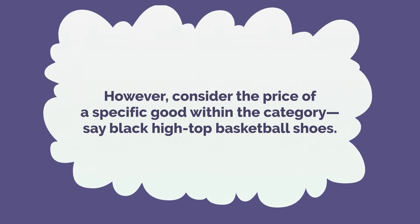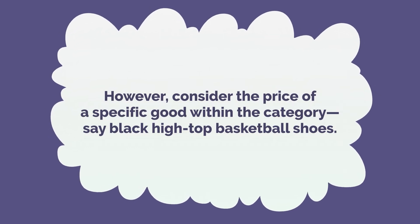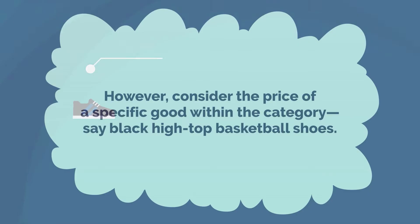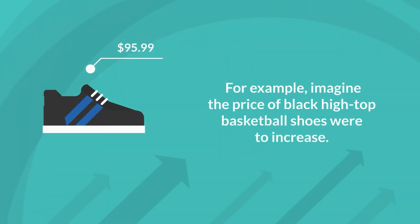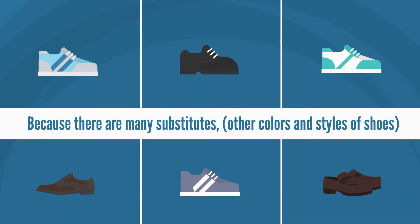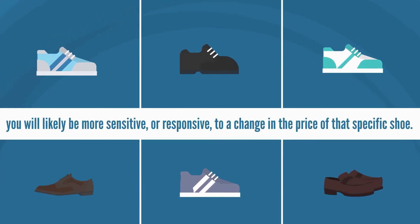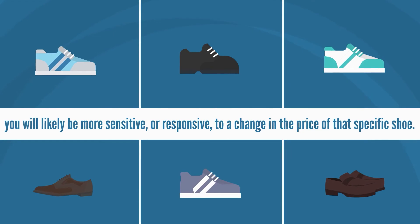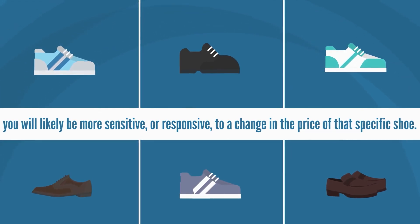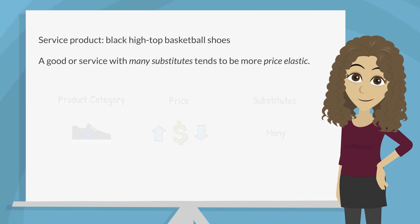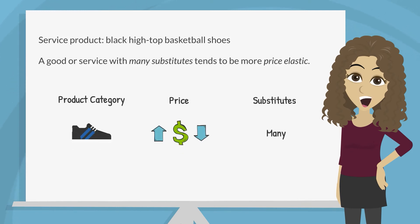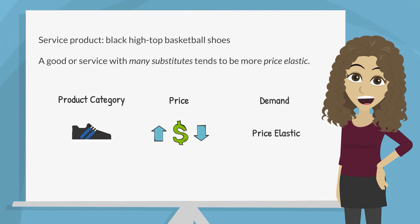However, consider the price of a specific good within the category — say, black high top basketball shoes. Imagine the price of black high top basketball shoes were to increase. Because there are many substitutes — other colors and styles of shoes — you will likely be more sensitive or responsive to a change in the price of that specific shoe. In economic terms, consumers will likely be very sensitive or responsive, so demand for this specific shoe will likely be more price elastic than for shoes as a category.